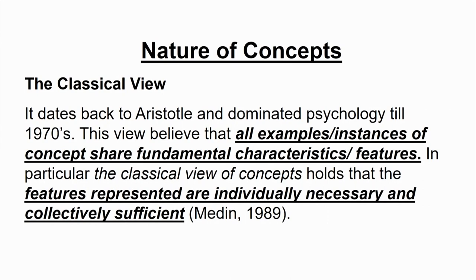In terms of a triangle: individually necessary means each triangle should have three sides — if it has less or more than three sides, it cannot be a triangle. Collectively sufficient means it should have three sides and be a closed geometrical form — then it is a triangle. Any figure with three sides and a closed geometric form is necessarily called a triangle, whether equilateral, right-angled, or isosceles.